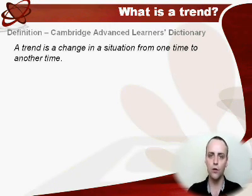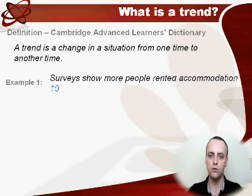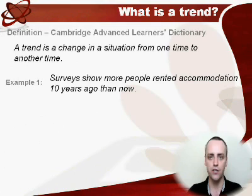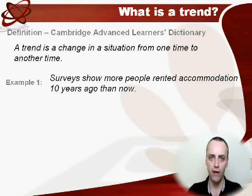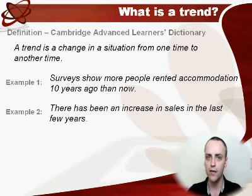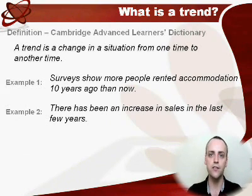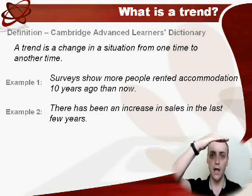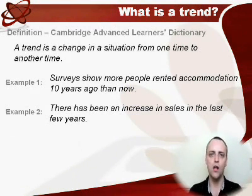An example of this would be: surveys show more people rented accommodation ten years ago than now. So the change in the situation from the past to now is going down — fewer people now rent accommodation, more people rented ten years ago. Another example: there has been an increase in sales in the last few years, so a few years ago sales might have been here, but now sales are here. OK, so that's what a trend is.